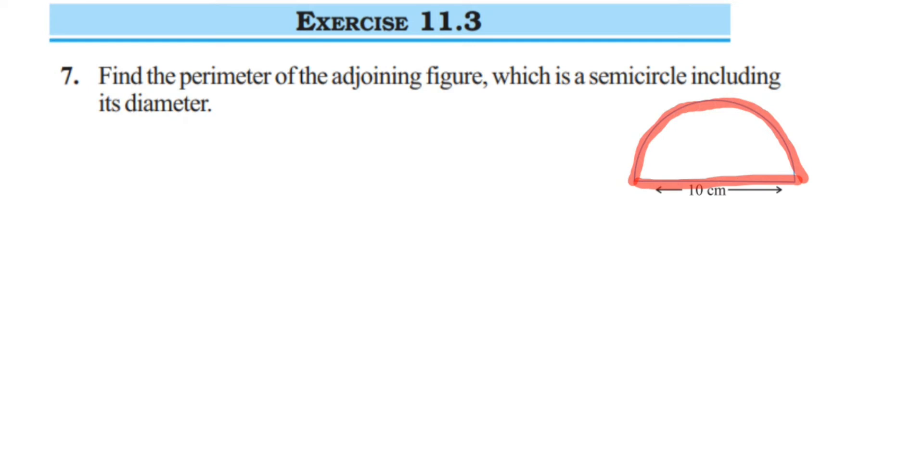Now, how to find that out? We know that perimeter is nothing but circumference in case of a circle. Suppose I have a circle, and we know the circumference of a circle is 2πr. This is for the whole circle.